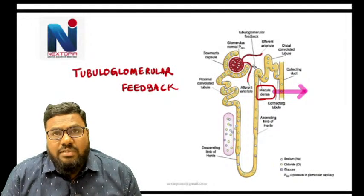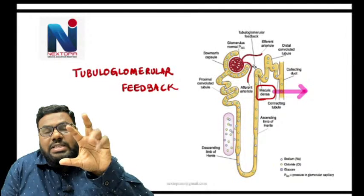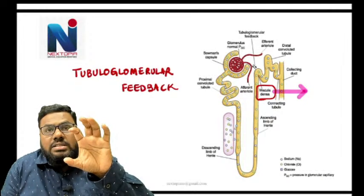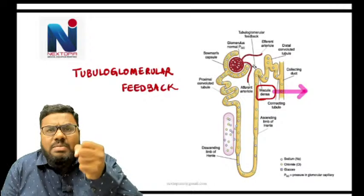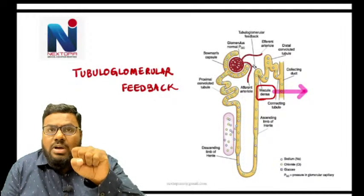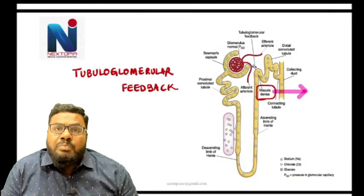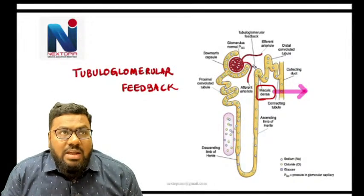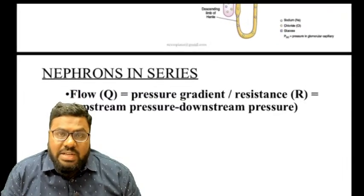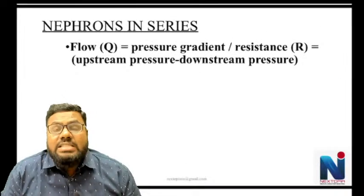What happens if there is constriction of the afferent renal arteriole? Constriction of the afferent renal arteriole results in less blood supply to the nephron, a fall in GFR, and decreased renal plasma flow. This is the tubuloglomerular feedback mechanism.